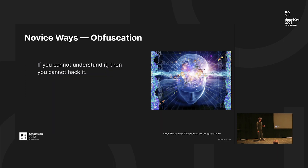The second novice way — I'd rather call it a catastrophic way — is using obfuscation. People think that if you cannot understand the code, it's not hackable. But that's usually not the case, because automated tools do not care what you name the functions. If you call your functions something like 'cheeseburgers' or whatever, it doesn't matter — tools can just try to extract Ether from your contract.